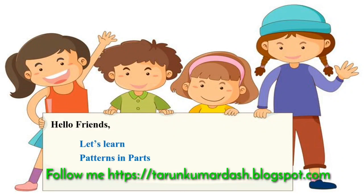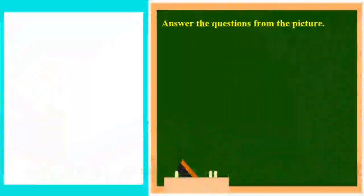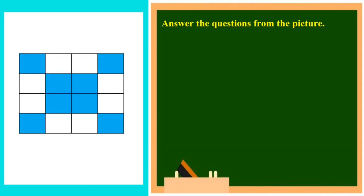Now let's learn patterns in parts. A picture will be given to you and you have to find out the answers to the asked questions. The picture is a table, and in this table some squares are there. Out of the squares, some squares are colored and some squares are not colored. You have to find out according to the questions.